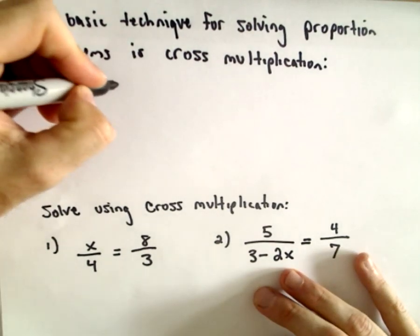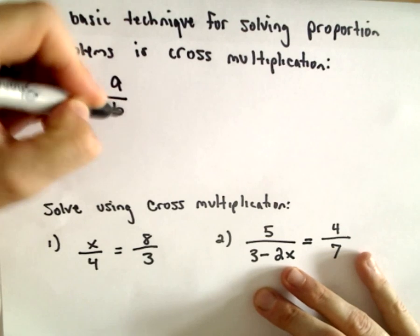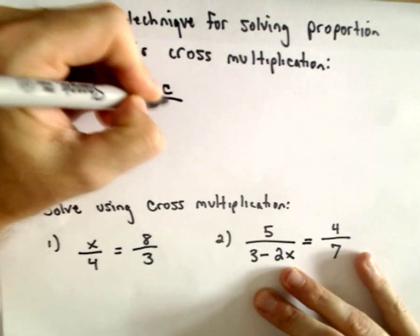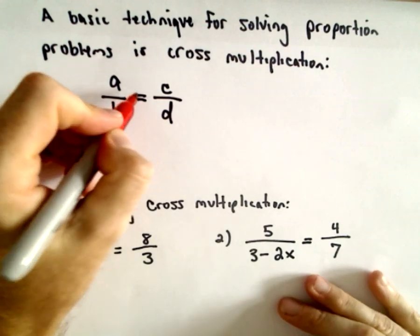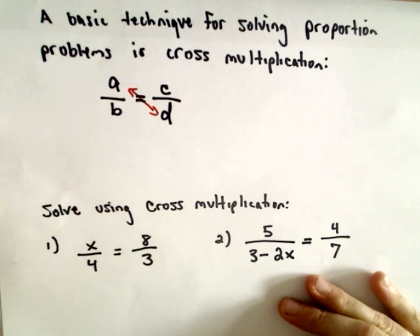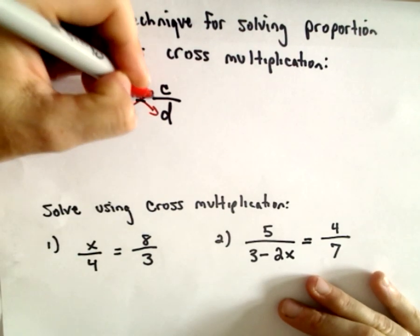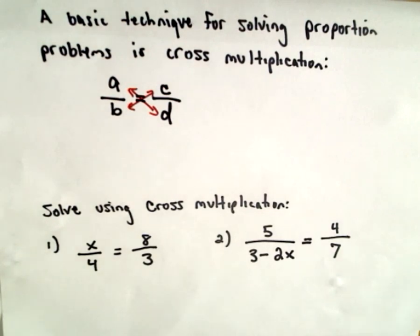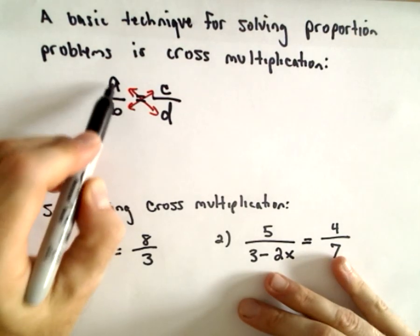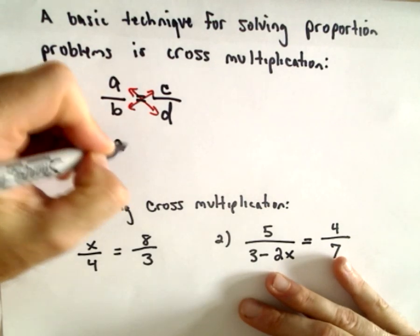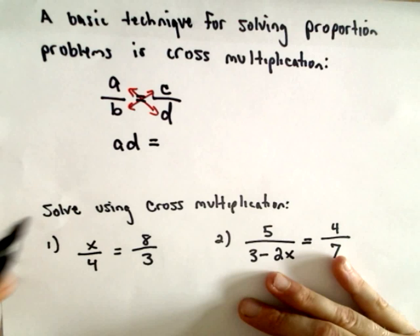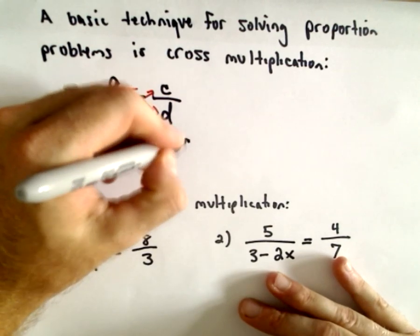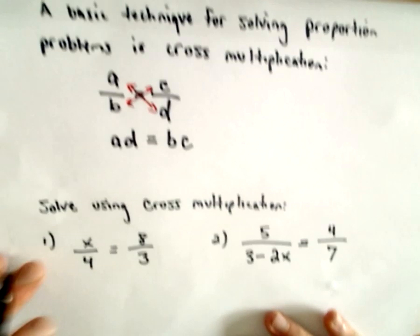Cross-multiplication says, basically, if you have a fraction, let's say a over b equals c over d. If you want to, you can create an equation with no... you can basically get rid of the fractions by doing cross-multiplication. We take the top left, multiply it by the bottom right. That'll give us a times d. And then we do the same thing. The bottom left, we multiply it by the top right. So that's known as cross-multiplication.